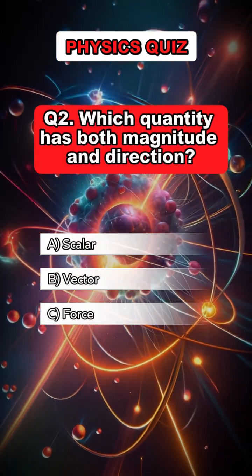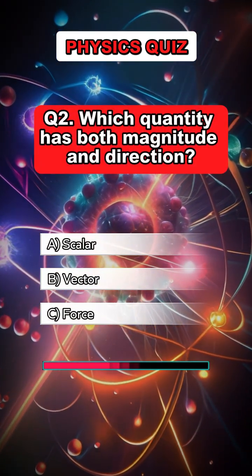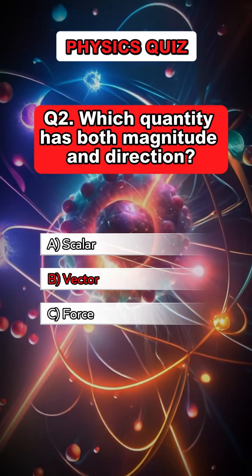Question 2. Which quantity has both magnitude and direction? Answer B: Vector.